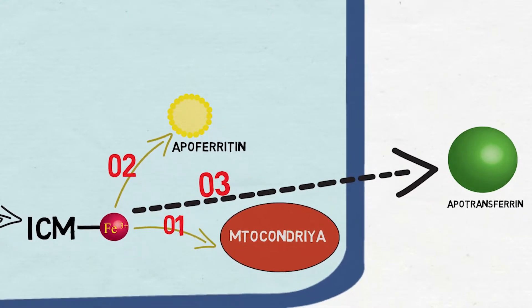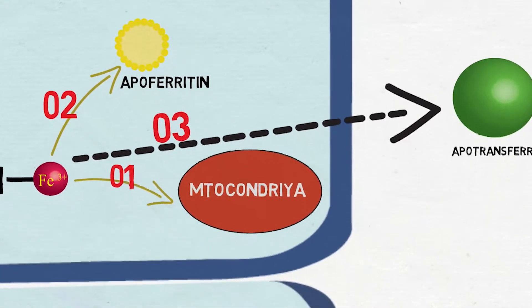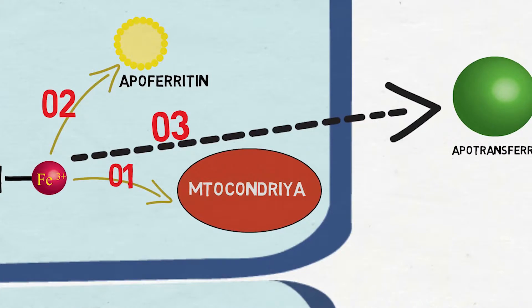Inside the mitochondria, iron is used for several functions like heme synthesis, and heme is an important prosthetic group for proteins involved in cellular respiration.